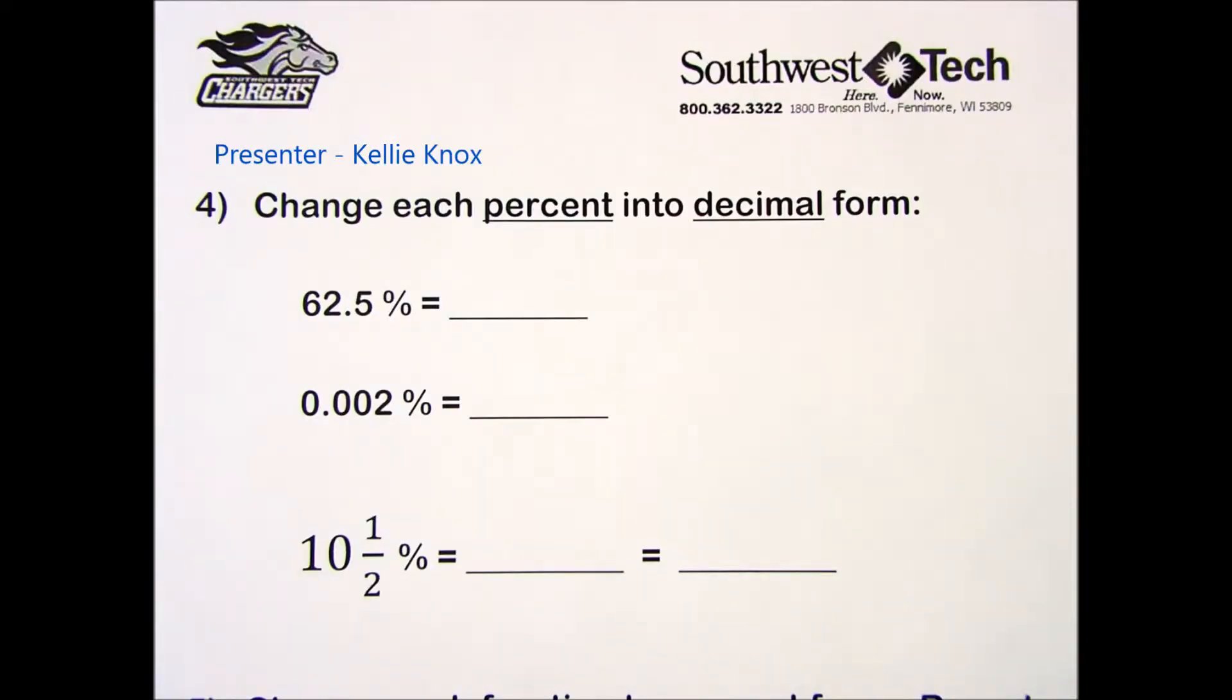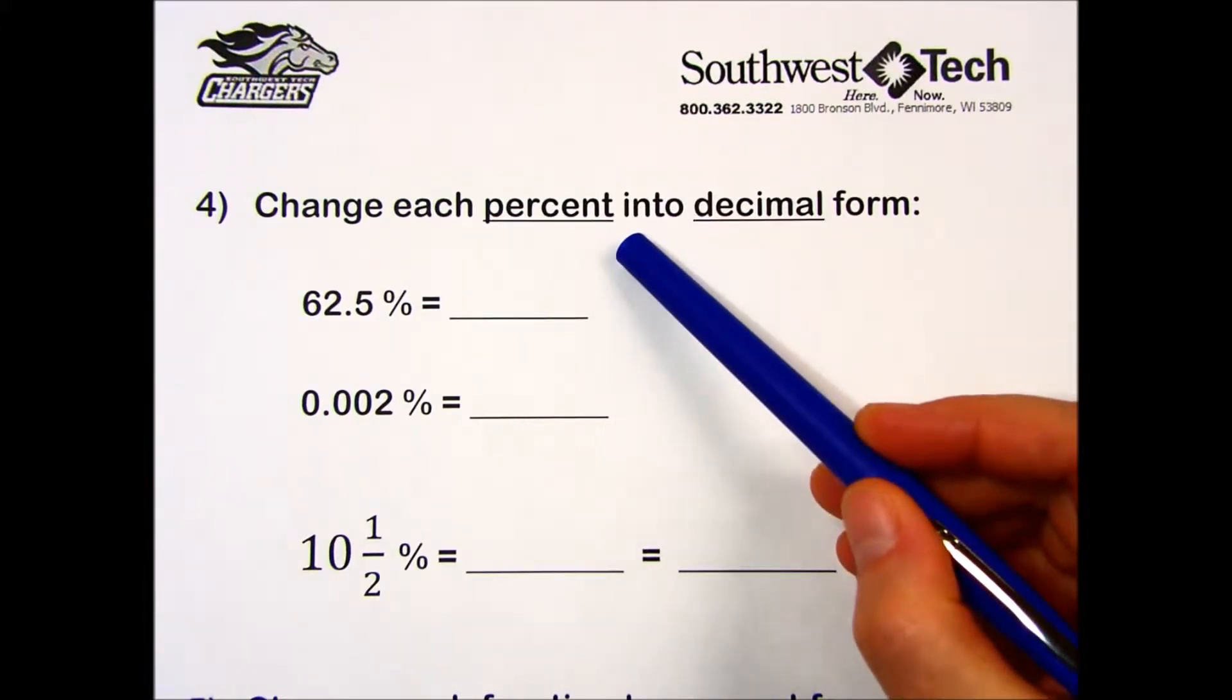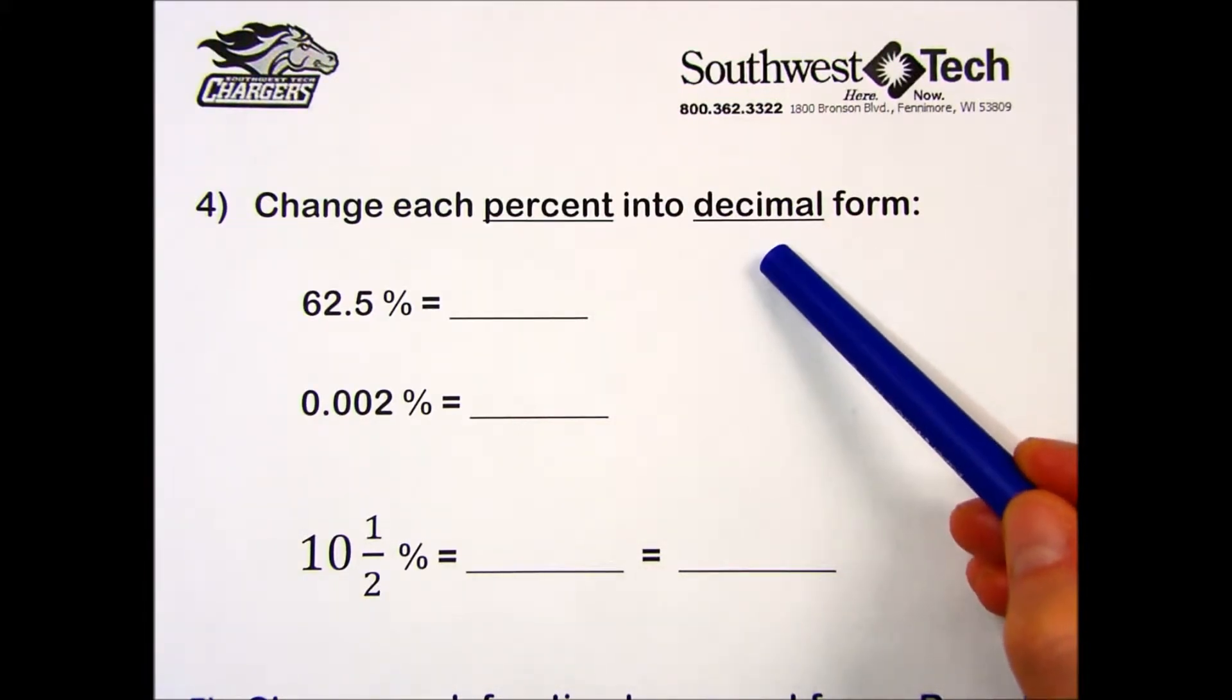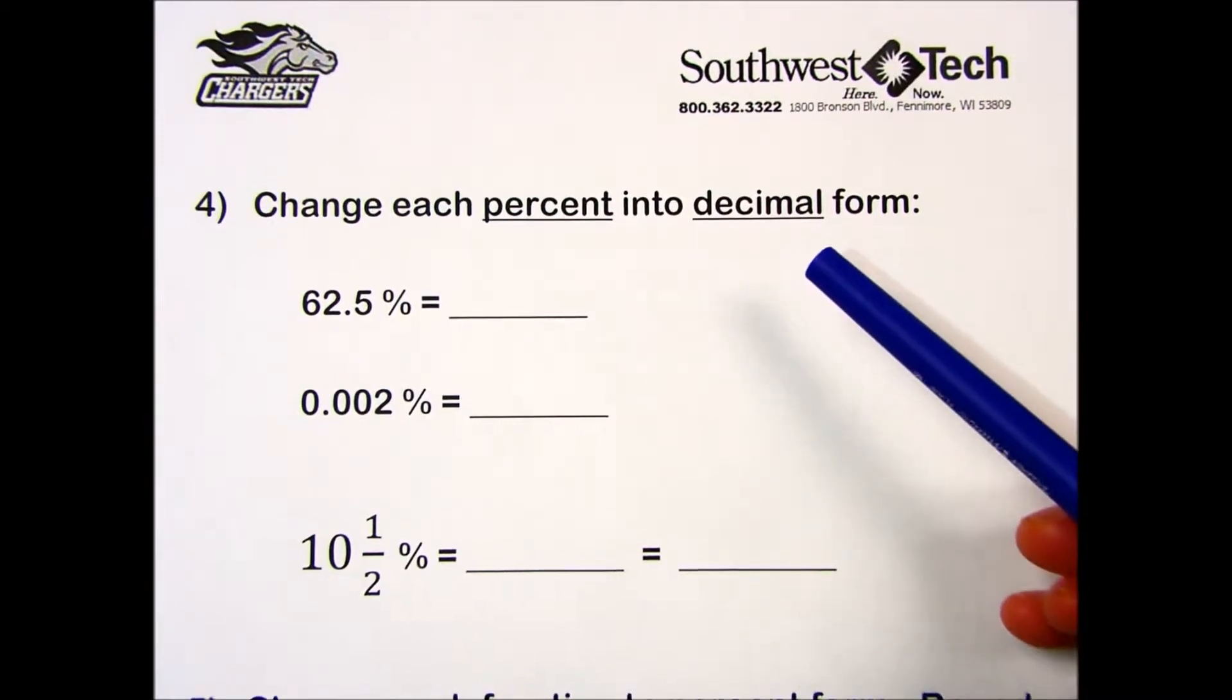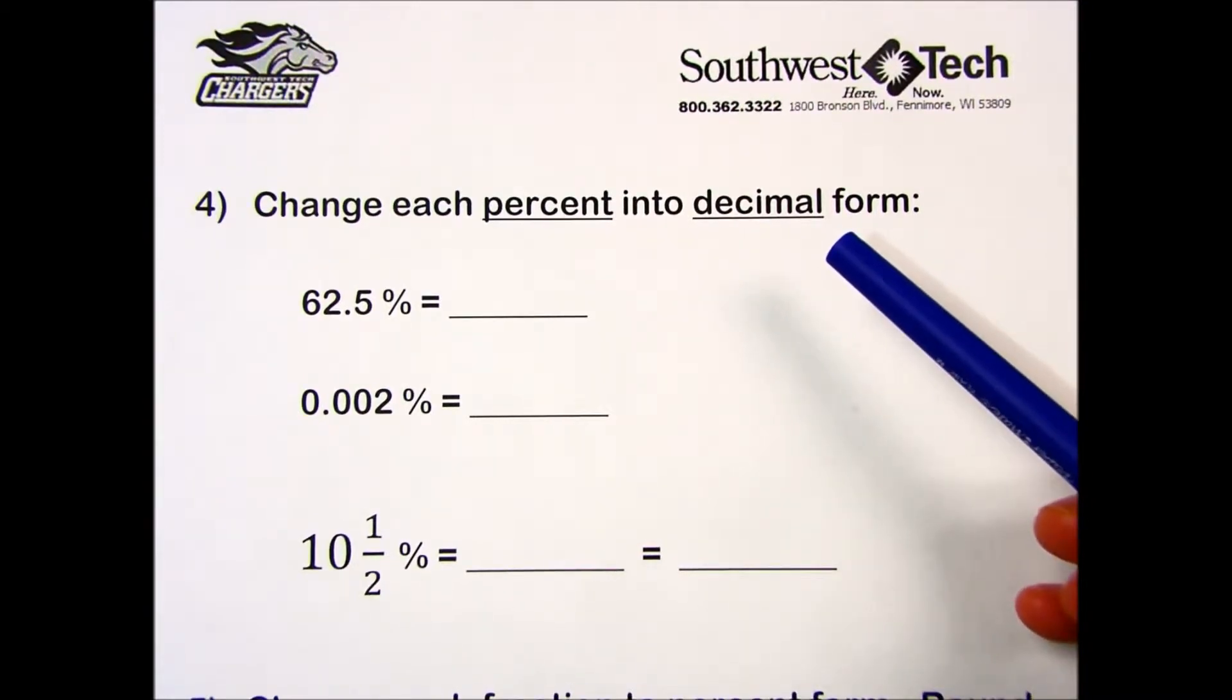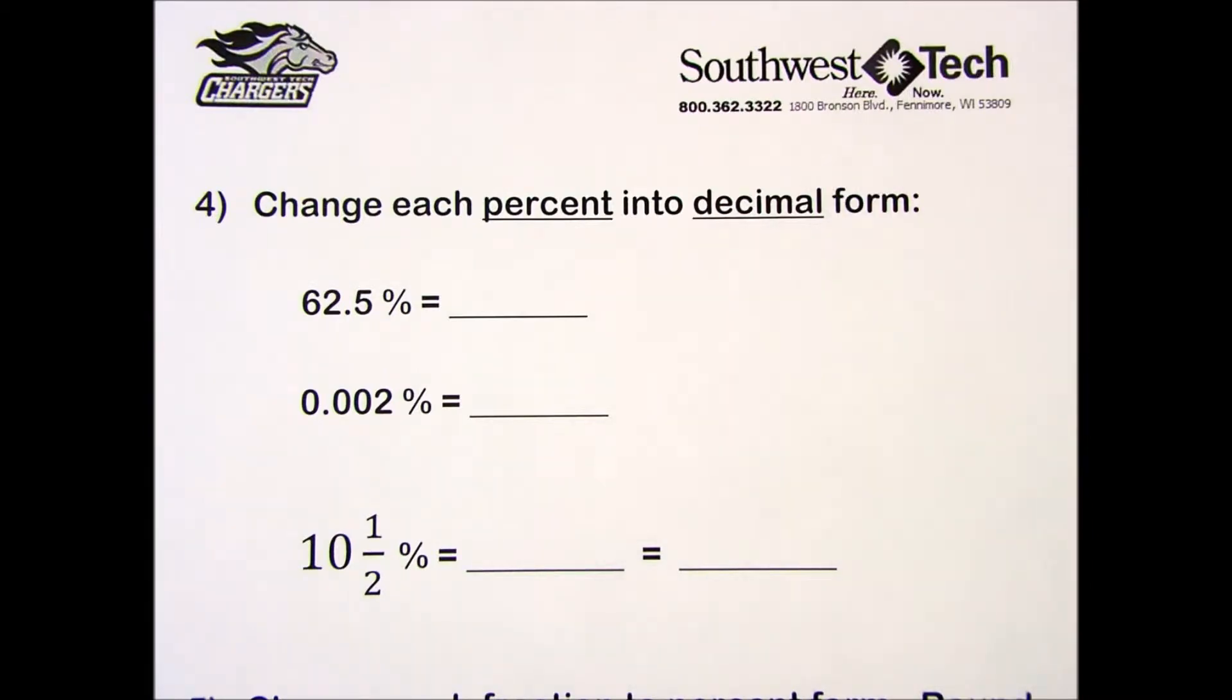Practice set 3-2 number 4 asks us to change each percent into decimal form. In your lesson you will find the directions that say to move the decimal two places to the left and remove the percent symbol.